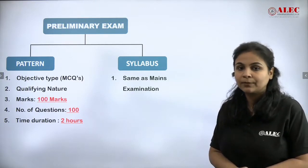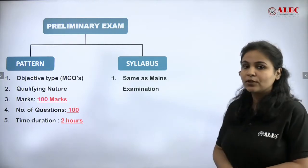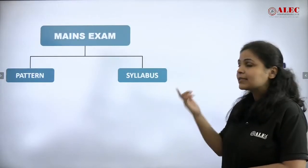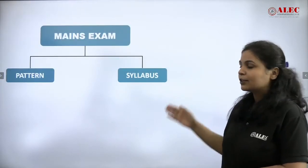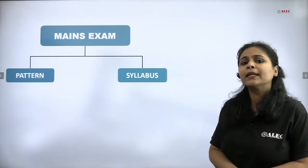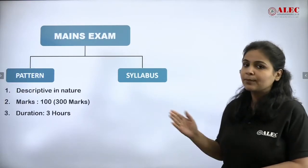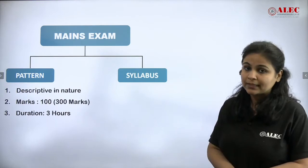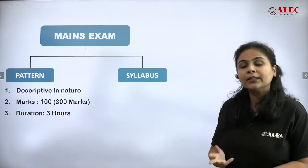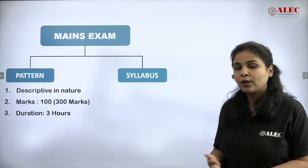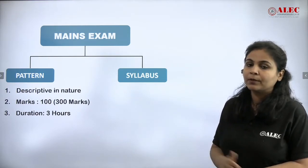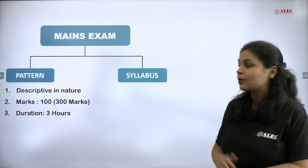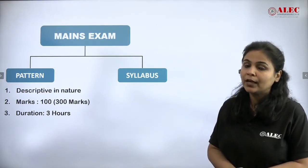Now let's go to the main examination round. Again, I have divided it into two parts — pattern and syllabus. The main exam is descriptive in nature. There are a total of three papers: one civil law paper, one criminal law paper, and one English paper, each carrying 100 marks, for a total of 300 marks.